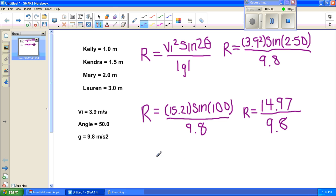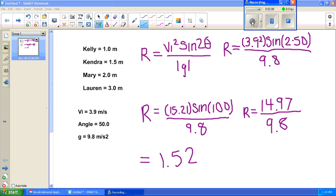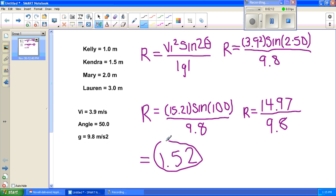14.97 divided by 9.8, which at the end will equal 1.52, which shows that it is closest to Kendra, which is 1.5 meters.